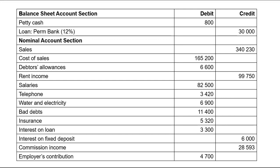Sales are 340,230. Cost of sales is 165,200. Debtors allowances is 6,000. When recording debtors allowances in the statement of profit or loss, subtract it from sales — not from cost of sales. The cost of sales relating to those returned goods has already been recorded in the 165,200, so subtracting it again from cost of sales would be double counting.